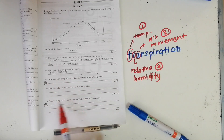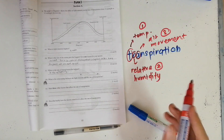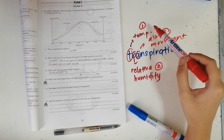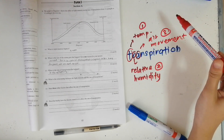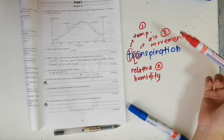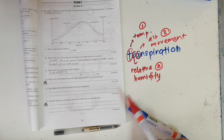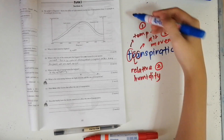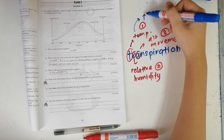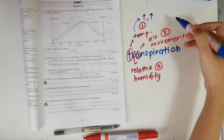Part F: describe briefly how the factors stated in E affect the rate of transpiration. First, we'll look at temperature — when the temperature increases, the rate of transpiration also increases, because when the temperature increases the light intensity increases and so the rate of transpiration increases as well.